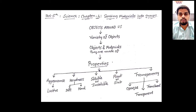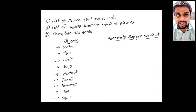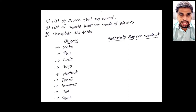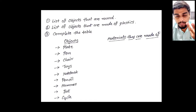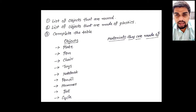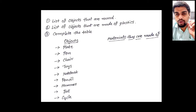Now the fun time begins! You have to make a list of objects which are round in shape — like your clock, a rubber ball, a plastic ball. I have given so many examples. Now you have to look around in your home or surroundings and make a list of any five objects which are round in shape. This is the first task for you.